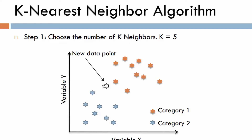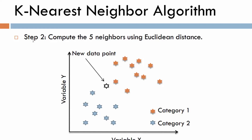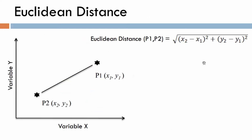After these four steps, your model is ready to predict any new data point. Let's do a manual exercise to solidify our knowledge and see the algorithm in action. We need to classify a new data point based on the available data points in the two categories. Starting the four-step process: step one is to choose the number of neighbors, so we keep it at five. Step two is to determine the five nearest neighbors of this new data point according to some distance measure.